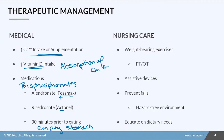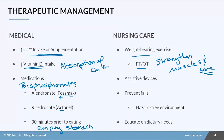For nursing care, we want to encourage weight-bearing exercises and we can get PT and OT involved. This helps to strengthen not only their muscles but also their bones and increases bone density. Weight-bearing exercises are really important. We also want patients to use assistive devices if they need them, because we must prevent falls — any kind of fall, any kind of bump, any kind of injury can cause a fracture.